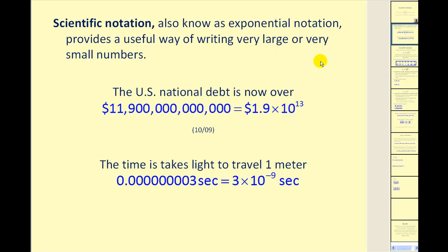Scientific notation, also known as exponential notation, provides a useful way of writing very large or very small numbers. For example, the U.S. national debt is now over $12,900,000,000,000, which could be written in scientific notation as 1.9 times 10 to the 13th power. The time it takes light to travel one meter in decimal notation can be written in scientific notation as 3 times 10 to the negative 9th power.